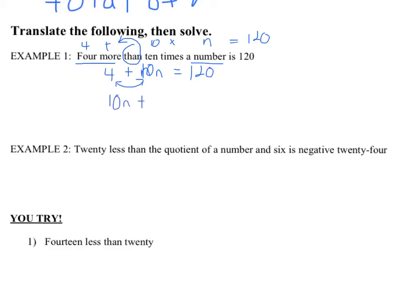The equation should be 10n plus 4 equals 120. This says four more than ten times a number is 120. You may be saying the order doesn't matter with addition — but you need to get in the habit of switching whenever you see that word 'than,' because with subtraction it does matter, and many students forget to switch the order and get the problem wrong. Go ahead and solve this. I got n equals 11.6. Plug it into the original equation and make sure it balances out.